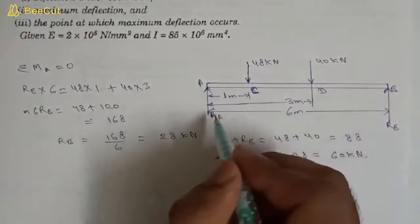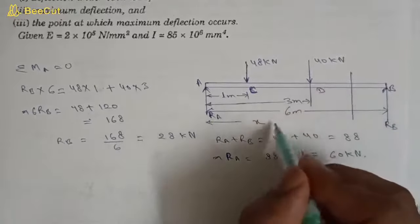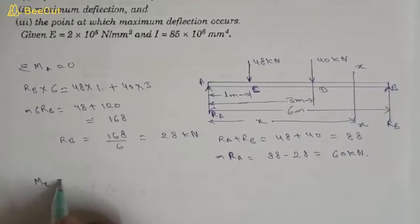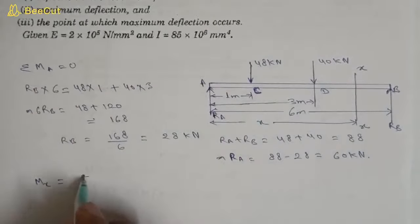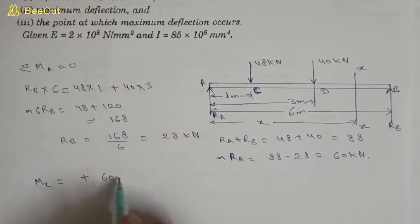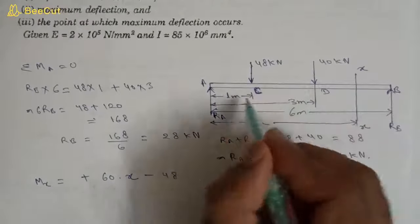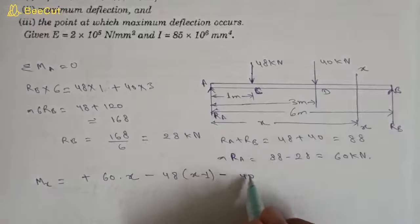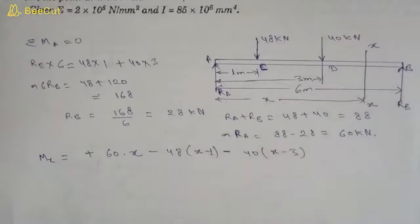Now we find the bending moment at section x using Macaulay's method. We select the section in the last portion of the beam at distance x from the left. The moment at x is: positive RA (60) into x — sagging — minus 48 into (x − 1) minus 40 into (x − 3).